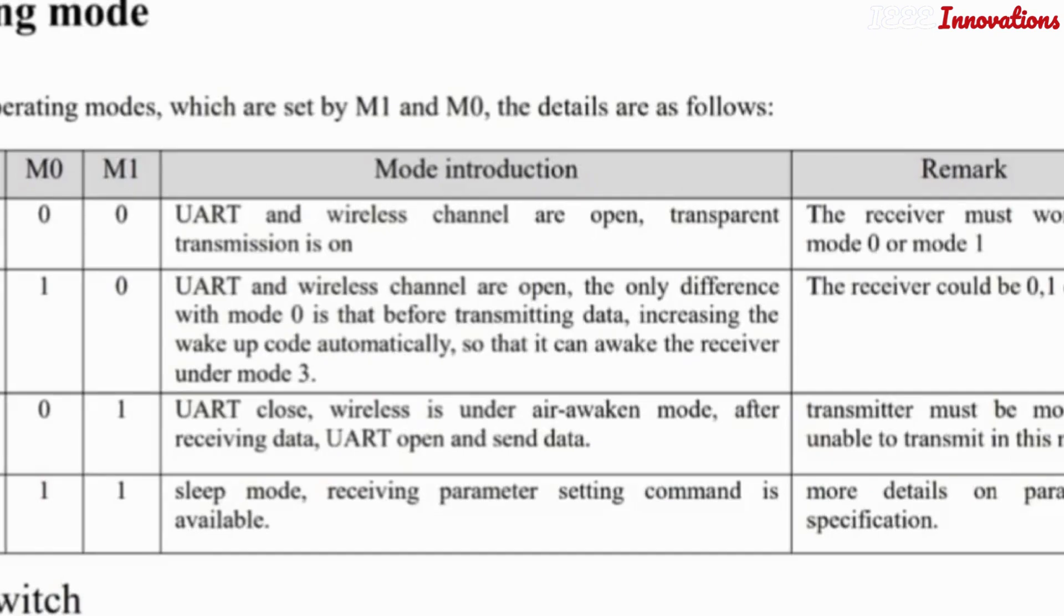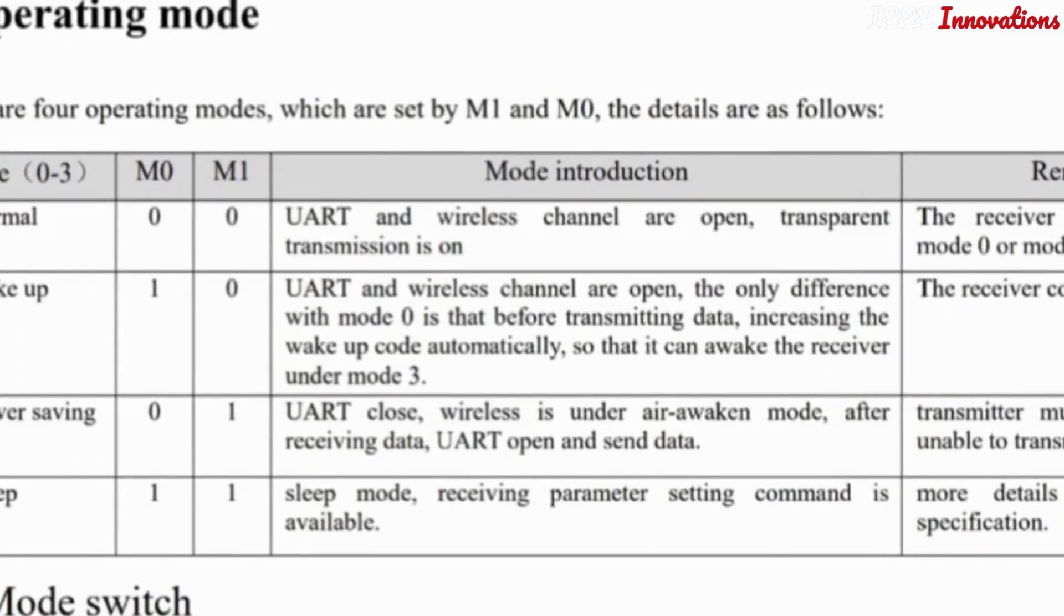You need to add the wake-up code automatically so it can wake the receiver. Mode 1 is wake-up mode. Mode 0 is normal mode. Mode 2 is power saving mode where UART is closed and wireless is in air-awaken mode. After receiving data, UART opens and sends data.